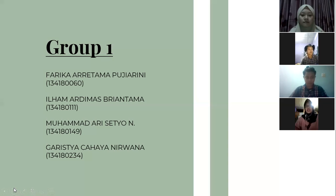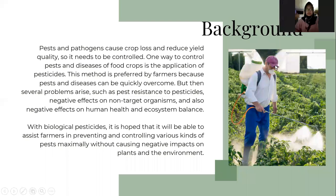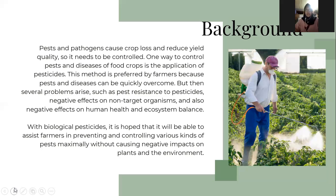As we know, pests and pathogens cause crop loss and reduced yield quality, so they need to be controlled. Nowadays, the use of chemical pesticides for pest control is still widely practiced because it can control pests and disease more quickly. However, when we use chemical pesticides in the long term, it can cause pest resistance, negative effects on non-target organisms, human health, and ecosystem balance. So we need to look for pest control agents that are effective without causing negative impacts on plants and the environment.